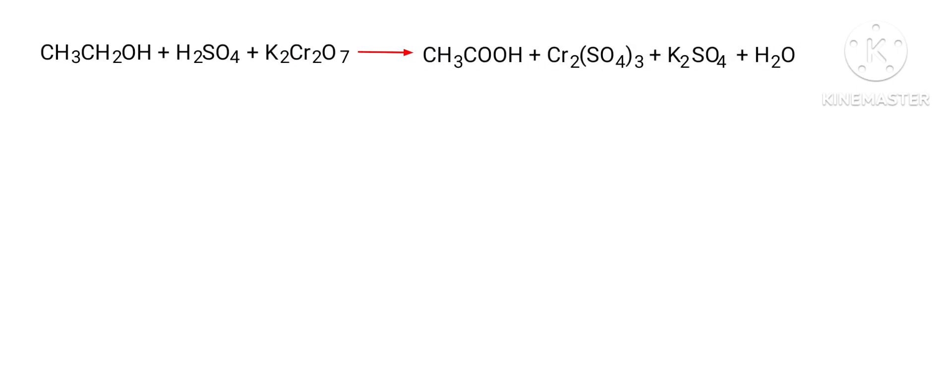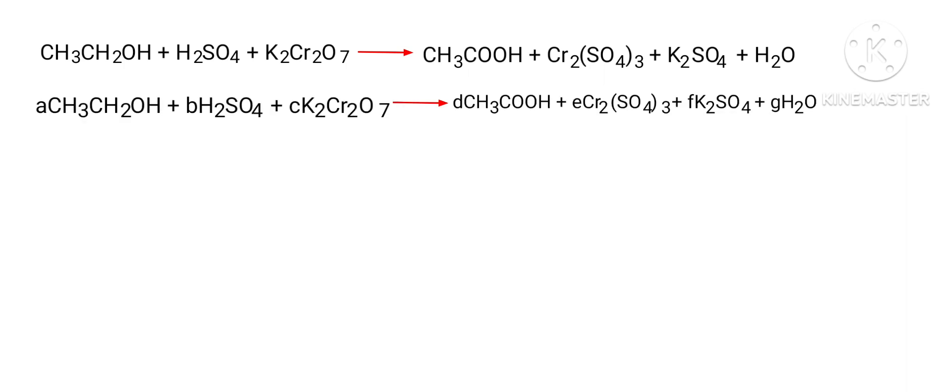The first thing we do is give each compound a letter coefficient: A·CH3CH2OH plus B·H2SO4 plus C·K2Cr2O7 gives D·CH3COOH plus E·Cr2(SO4)3 plus F·K2SO4 plus G·H2O.